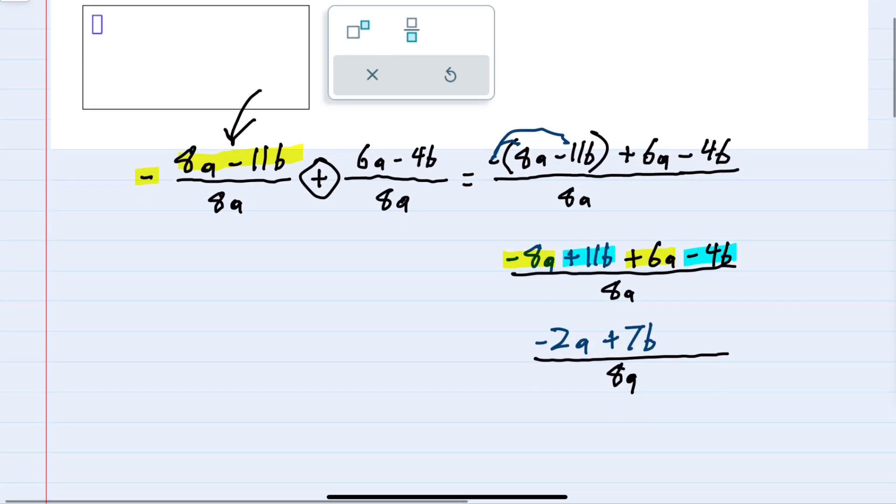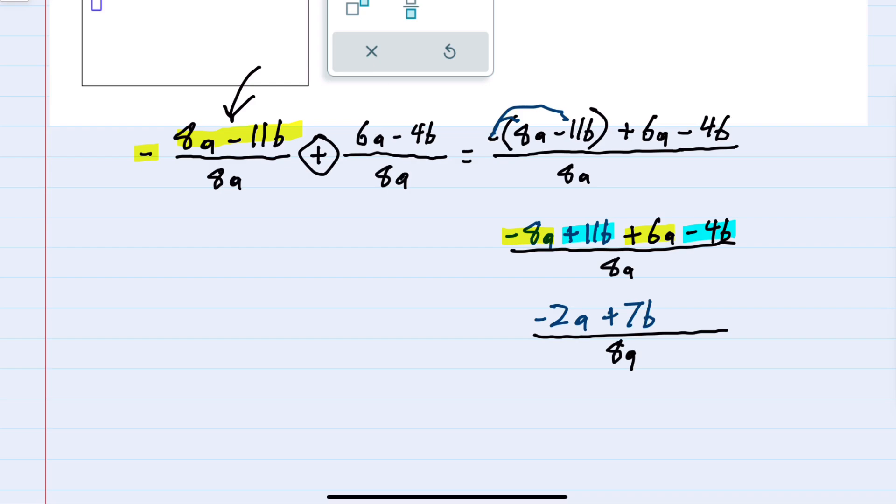From here we've combined like terms. I would look to see if there was anything that I could factor out of the numerator that might be able to cancel with something in the denominator. But in this case there's nothing that factors out of the numerator. So this would be our simplest form for our answer.